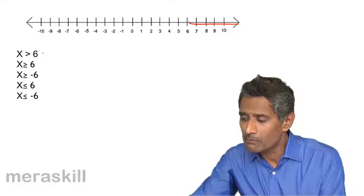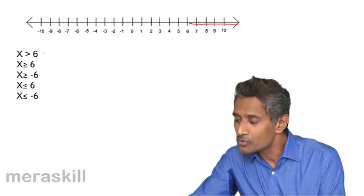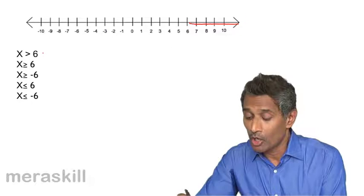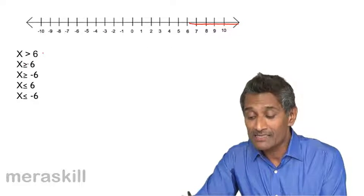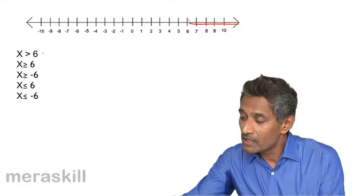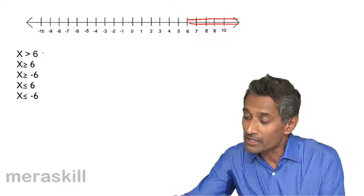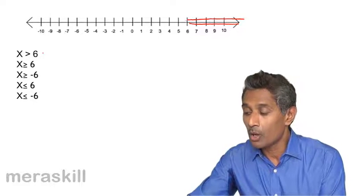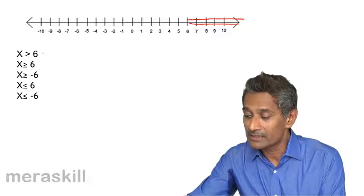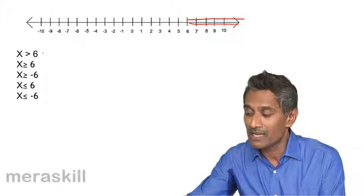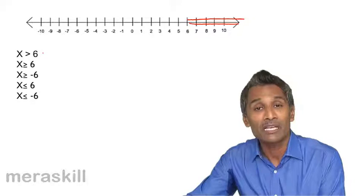It is any number more than 6, so to the right of 6. On the contrary, if you're saying x is greater than or equal to 6, we start from 6 and then we go ahead. So it is all the numbers including 6. See the difference in the line - we are starting after 6 here, we are starting from 6 and then we move that side.